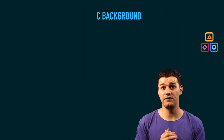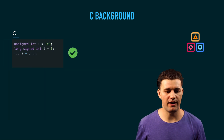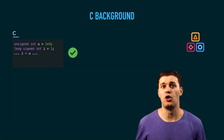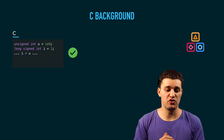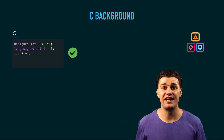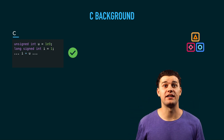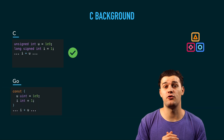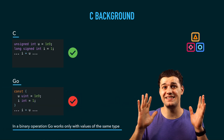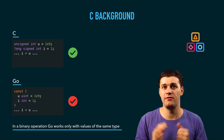To give a more specific example, let's look at a piece of C code. You have an unsigned int and a long signed int equal to one, and later you add those numbers. In C that's totally legal. However, in Go it's going to give you a big error. In Go you have to be specific about your end result, as I said before.